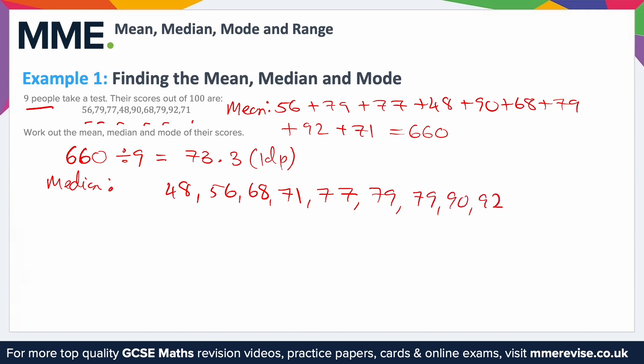From there you need to find the middle number. We can cross off from either side, working inward, and eventually we end up with one number on its own in the middle. So the median is 77 in this case.